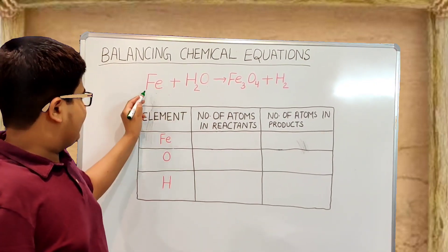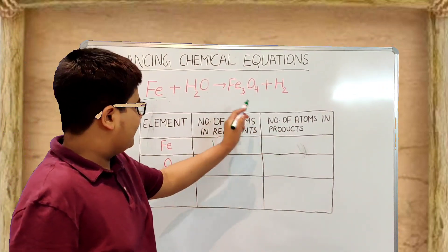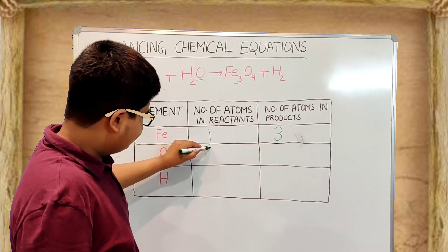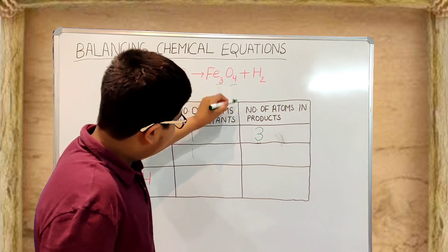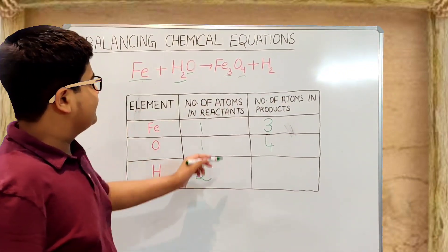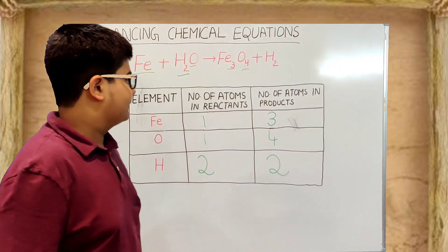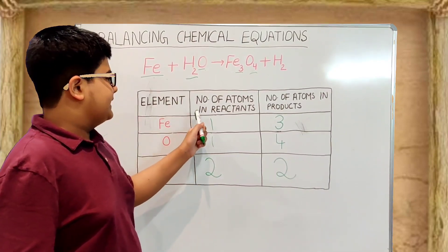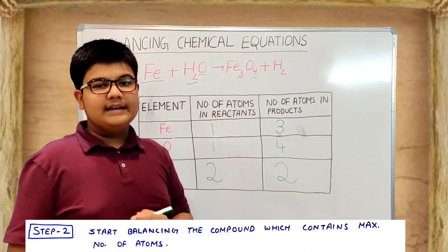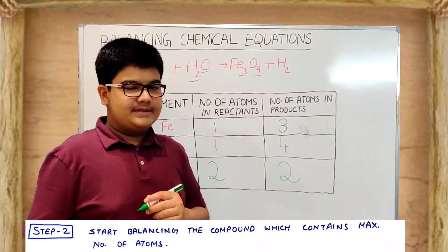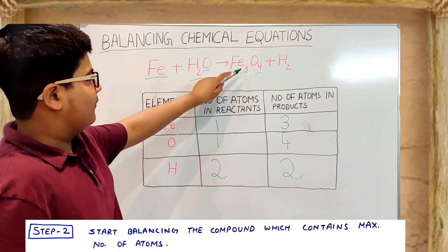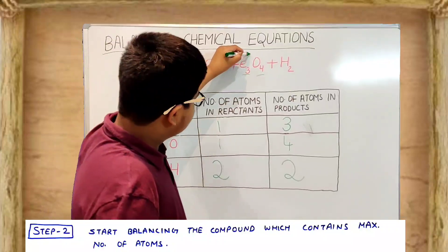In the table: iron has 1 atom in reactants and 3 atoms in products. Oxygen has 1 atom in reactants and 4 atoms in products. Hydrogen has 2 atoms in reactants and 2 atoms in products. Step two: start balancing the compound with the maximum number of atoms, which is Fe3O4 with seven atoms. Step three: within that compound, choose the element with the maximum number of atoms, which is oxygen.